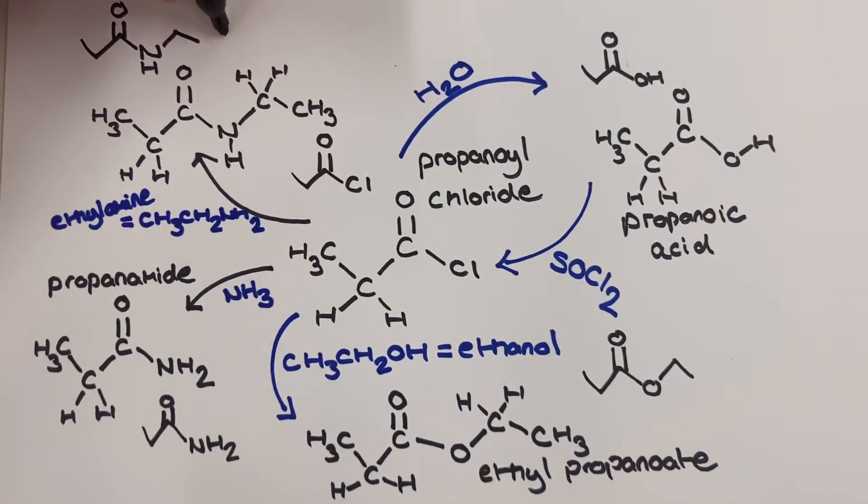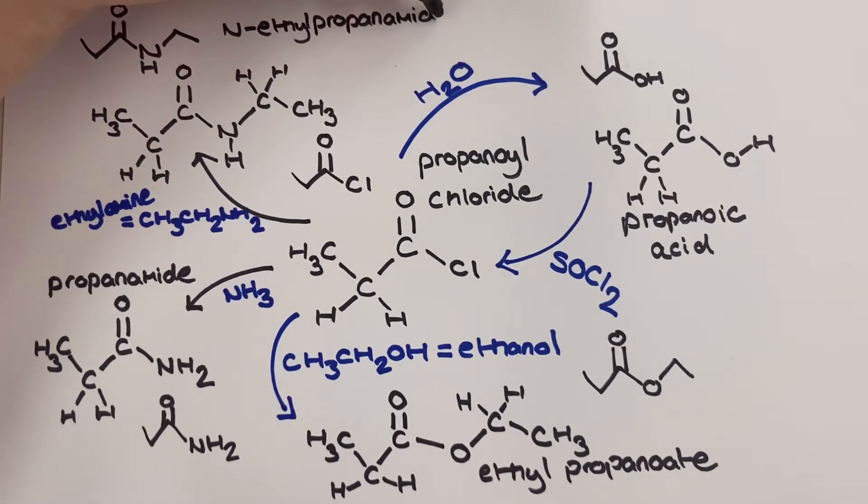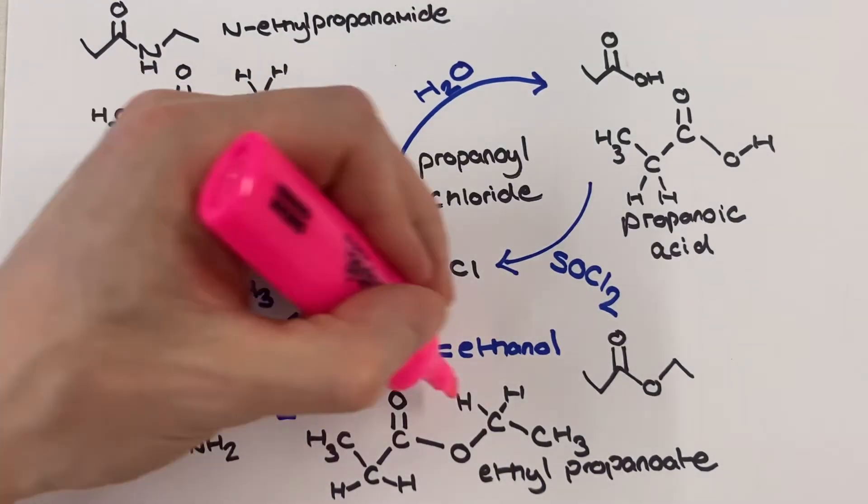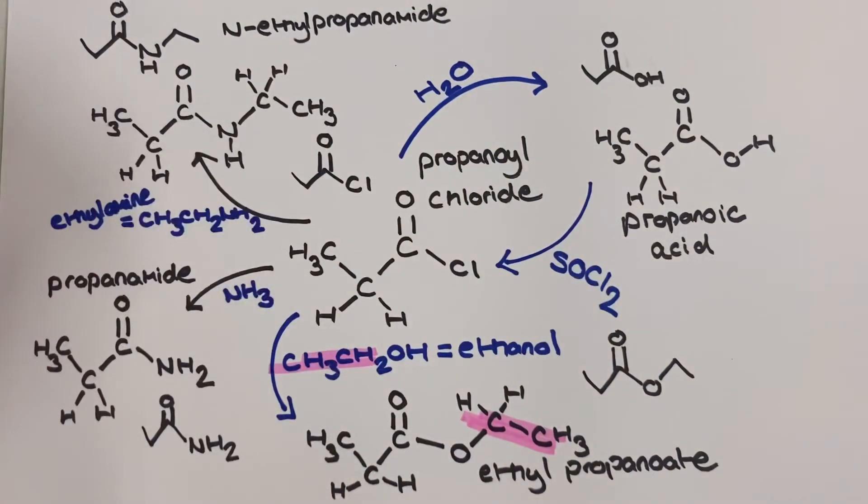The secondary amide here is named N-ethyl propanamide, and for further guidance about naming amides please watch the video that's linked at the end of this tutorial. The other product in this reaction to produce this secondary amide from our acyl chloride is a primary ammonium salt which looks just like the amine that I'm using, the ethyl amine, but it's been protonated and it's got a chloride ion as well.